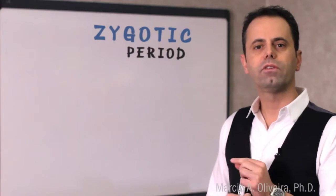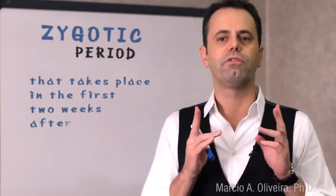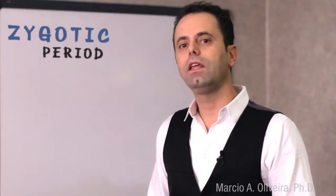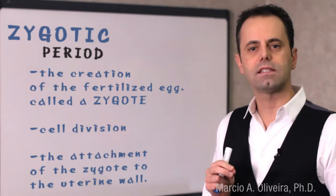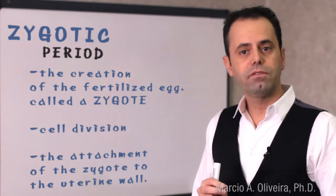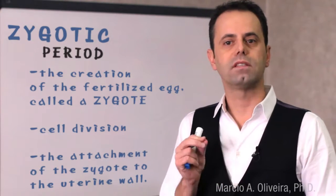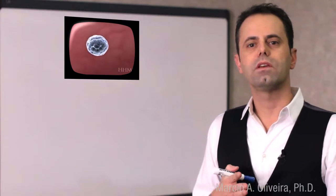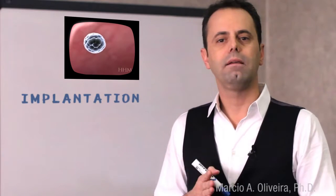The zygotic period is a period of prenatal development that takes place in the first two weeks after conception. It includes the creation of the fertilized egg called a zygote, cell division, and the attachment of the zygote to the uterine wall — a process called implantation — which takes place about 11 to 15 days after conception.